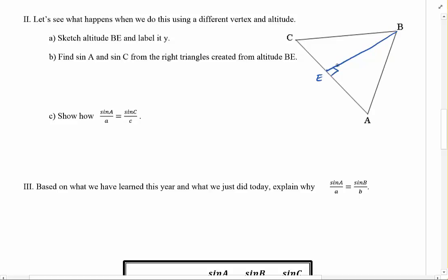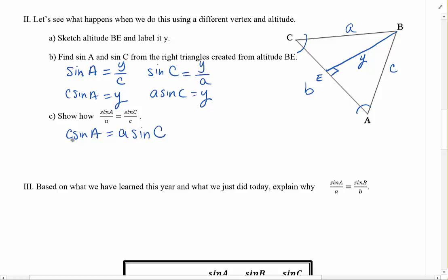Fine. Label it Y. This would be side B. This would be A. That would be C. If I want to do the same thing, sine A being opposite over hypotenuse, I'm going to get Y over C. Sine C is going to be Y over A, opposite over hypotenuse, which means C sine A equals Y and A sine C equals Y. So I have C sine A equals A sine C. This should look repetitive.